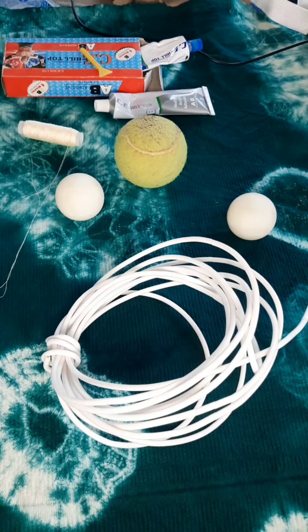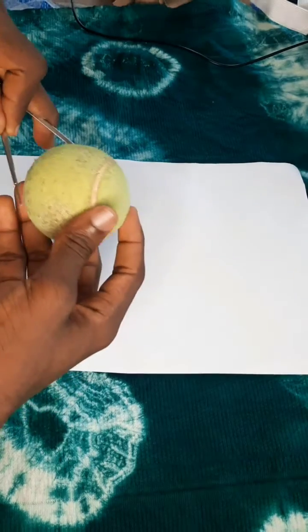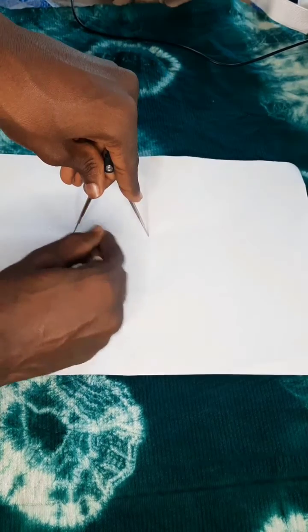Use a divider to measure the diameter of the ball like so. Place that on a piece of paper, mark those sides. Now use a ruler to measure the length of the two dots you made and locate the center point.